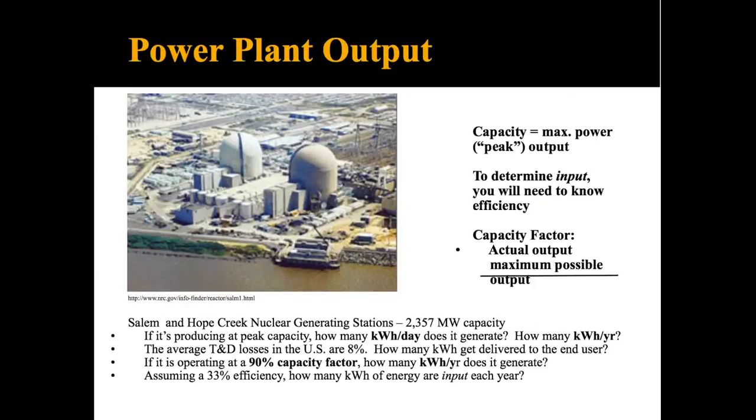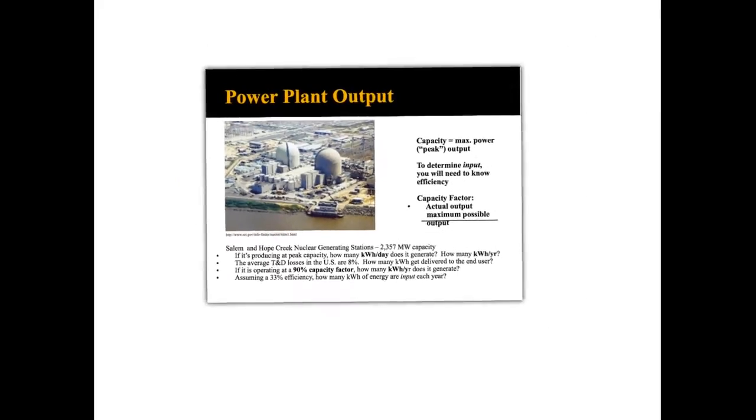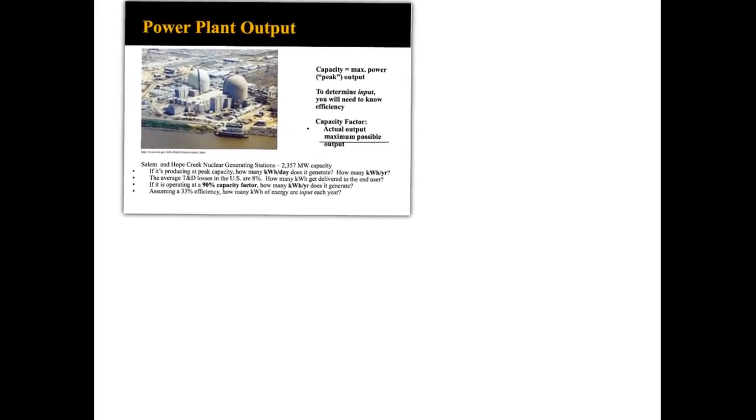So here's our Salem and Hope Creek Nuclear Generating Facility, which is a 2,357 megawatt capacity facility. So let's do some calculations here. Make this a little bit smaller, more manageable. Alright, so remember that this is your maximum, so this is your peak capacity. So if we want to figure out the first one here, how many, if it's operating at peak capacity, how many kilowatt hours a day and how many kilowatt hours per year would it generate? Let's do that one.